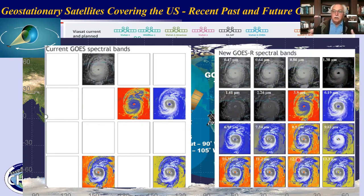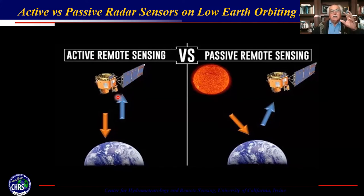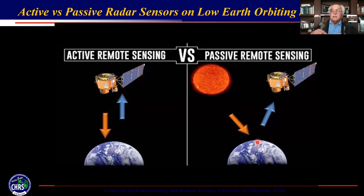If you have an active remote sensing sensor, a signal is sent from the satellite, bounces off the clouds or Earth, and then we capture that signal and can distinguish whether a piece of cloud has rainfall in it or not. Passive microwave is only passive in the sense that it receives radiation from the sun — radiation on clouds versus land versus water sends different types of signals, and you try to extract information from that.